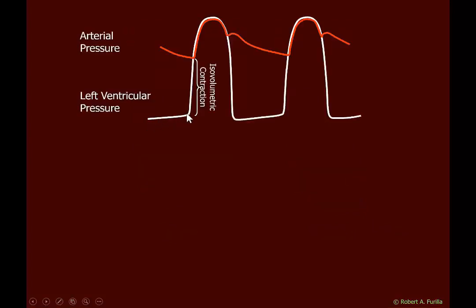Looking at this figure, the pressure in the left ventricle is very low — only a few millimeters of mercury. At the beginning of contraction, we see the pressure rising. We call this isovolumetric contraction because blood is not leaving yet; blood cannot leave the heart until the aortic valve opens once the pressure rises above aortic pressure. The valve opens, blood is ejected, it slows down toward the end of systole, and then the aortic valve closes.